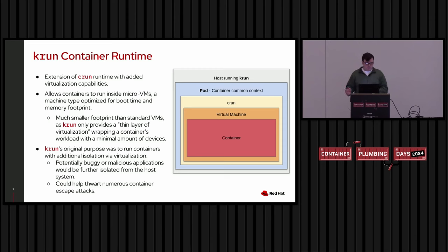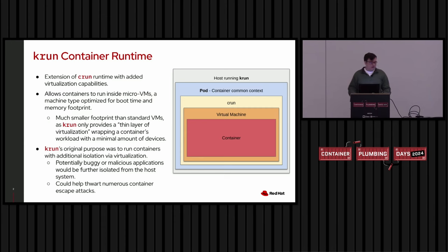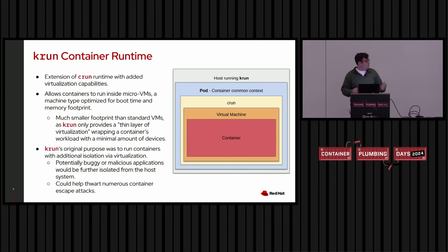The original purpose of KRUN was to run containers inside a virtualized context so that standard container escape attacks — anything buggy or potentially malicious — could be further isolated from the system. If it tries to attack, it's still virtualized and isolated from the rest of the host system and other containers. It can thwart numerous container escape attacks because an attacker would also need to escape the virtual machine to do real damage.